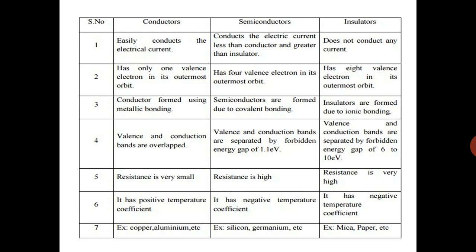Last difference is example of conductor: copper, aluminum. Semiconductor's example: silicon, germanium. And insulator's example: mica, paper, rubber, wood, etc.